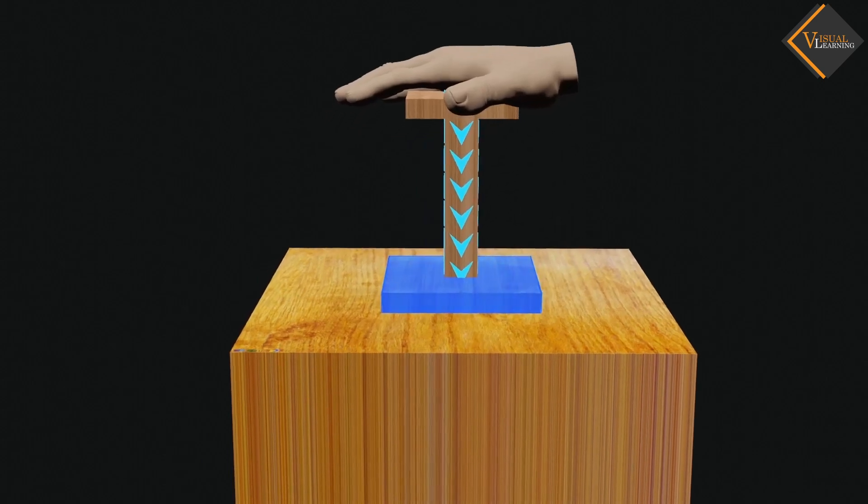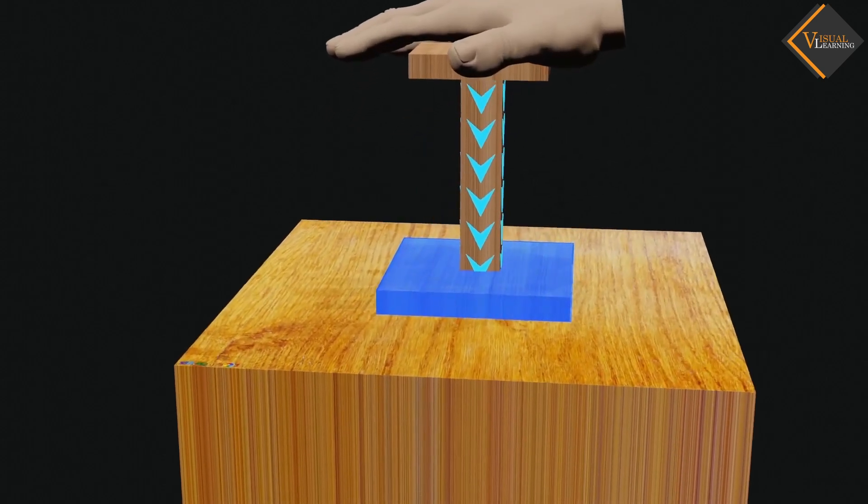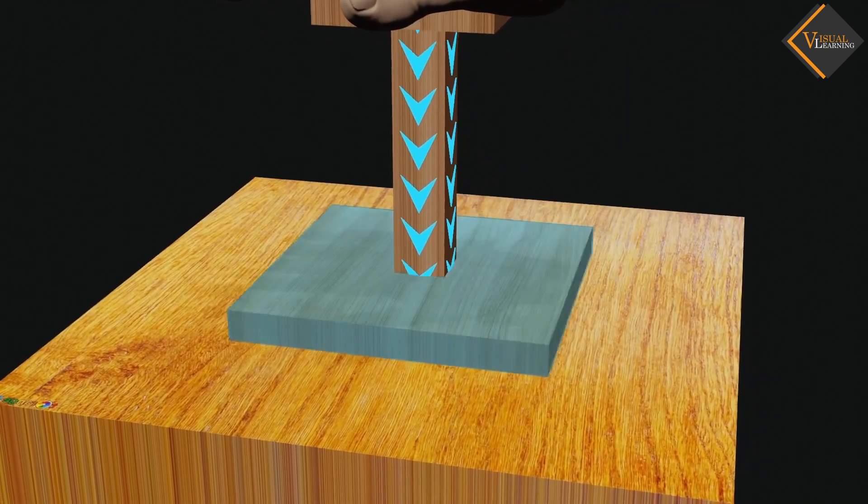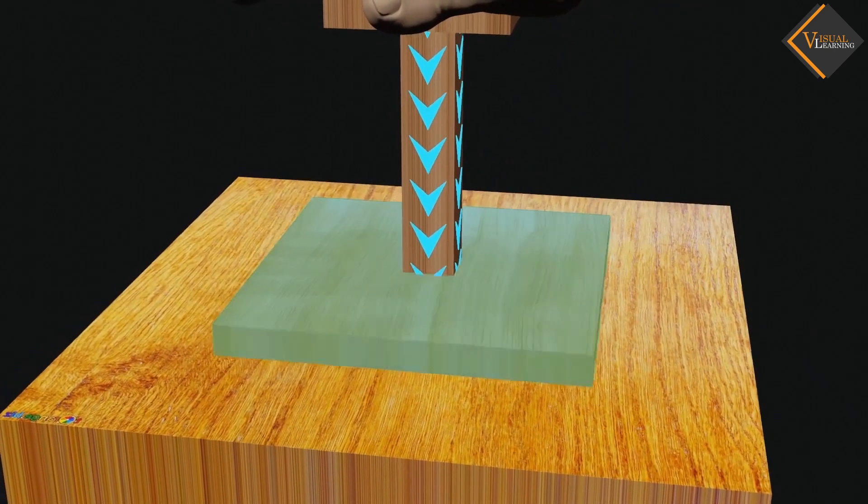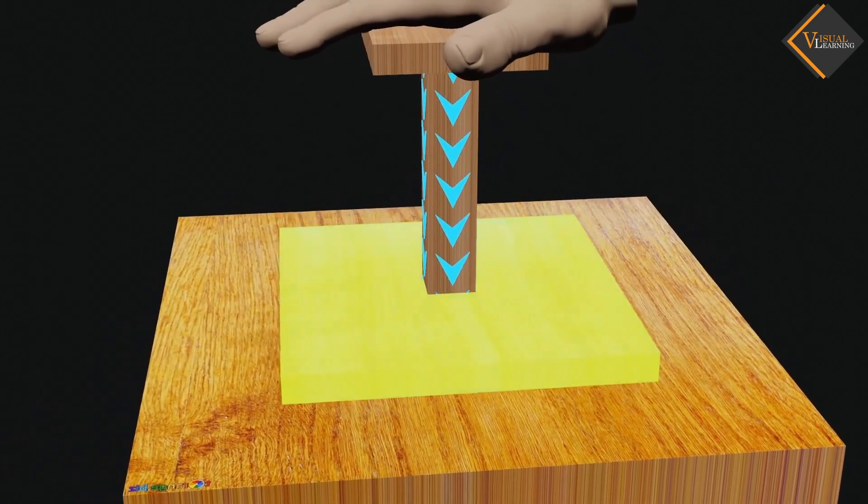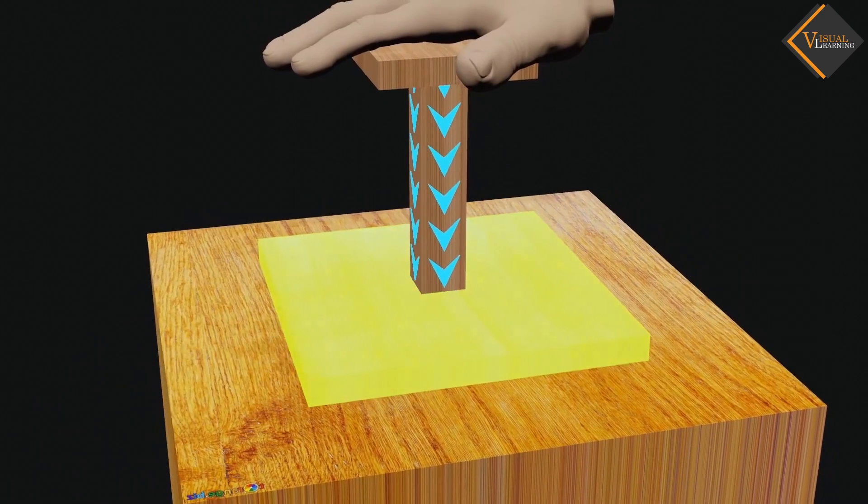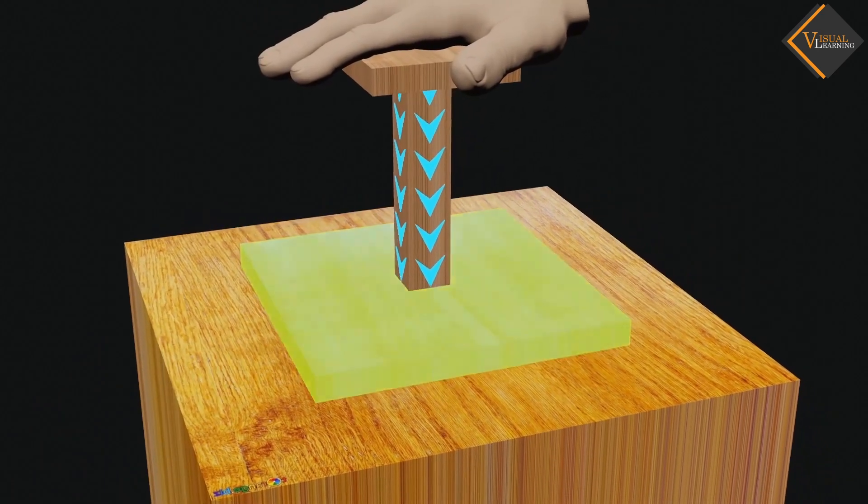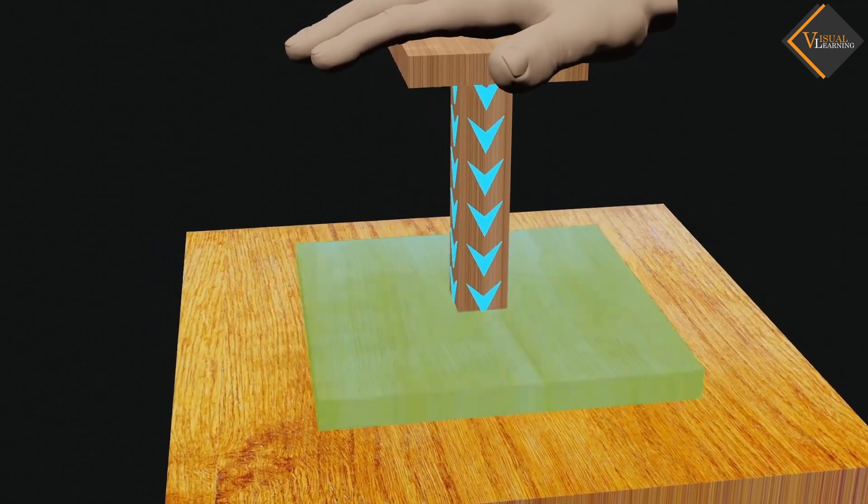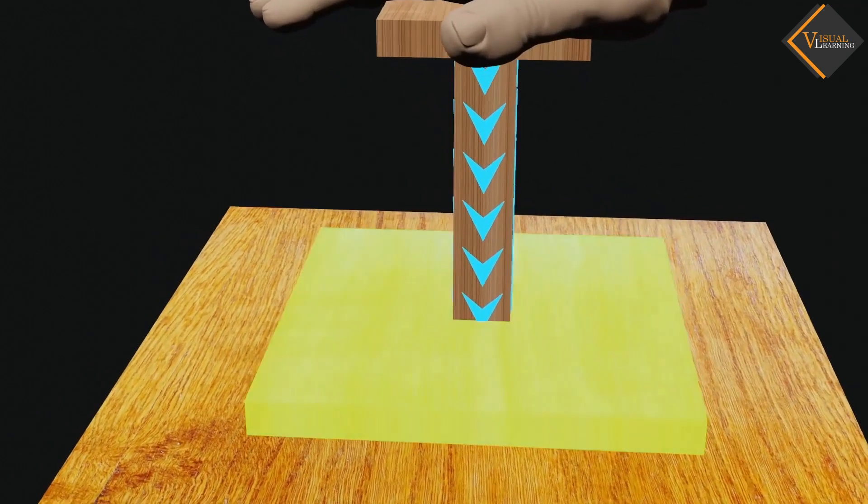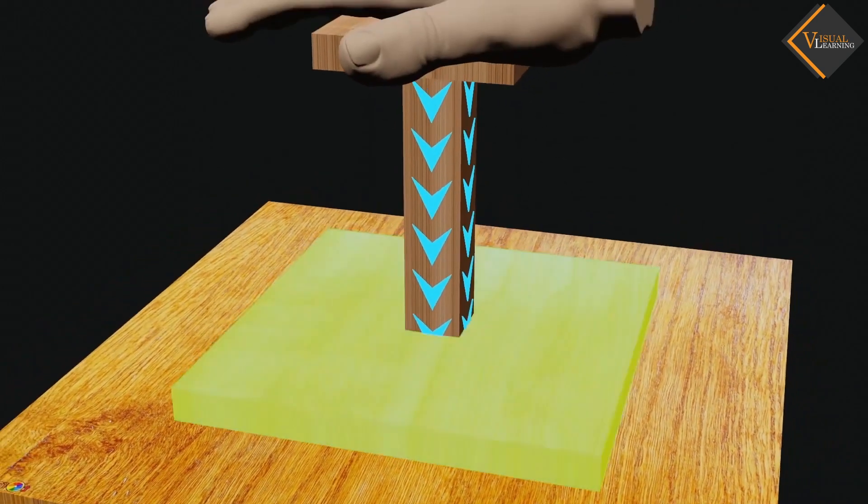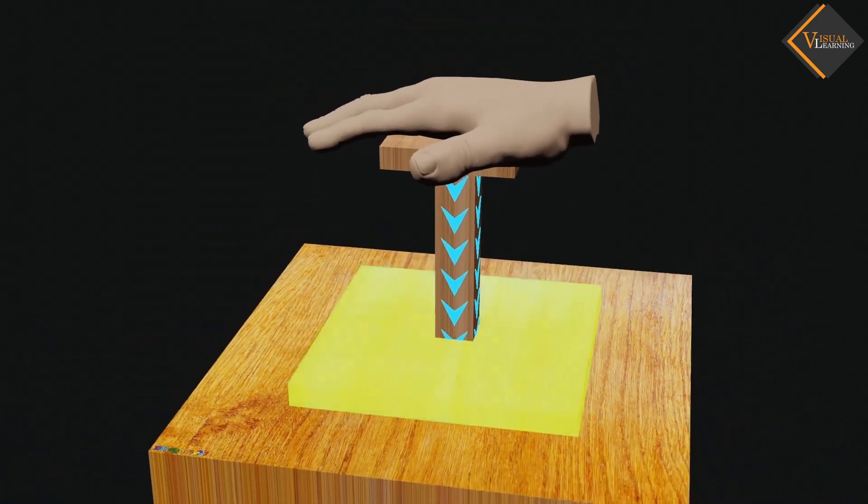Now, reverse the scenario. Increase the size of the bottom of the wooden block and consider that the same force is acting perpendicular at the top of the wooden block. As the size of the bottom increases, the force is distributed equally on each point of the surface area of the bottom. Because the same force is acting on a larger area, the effect of force on each point is less.